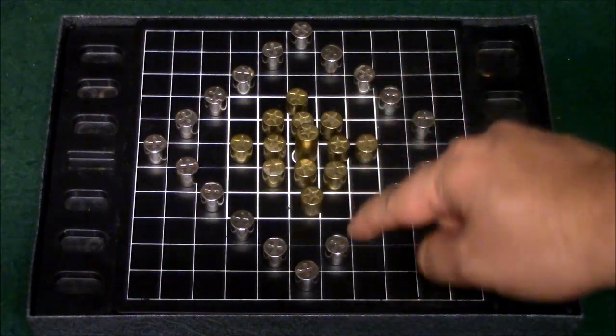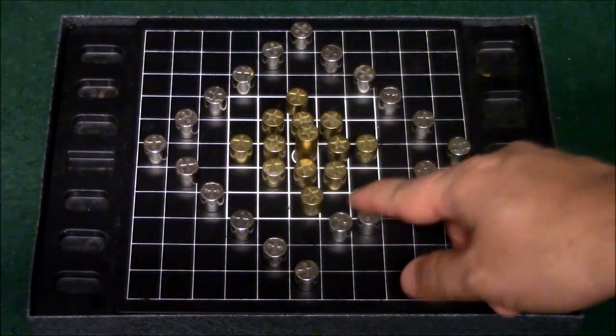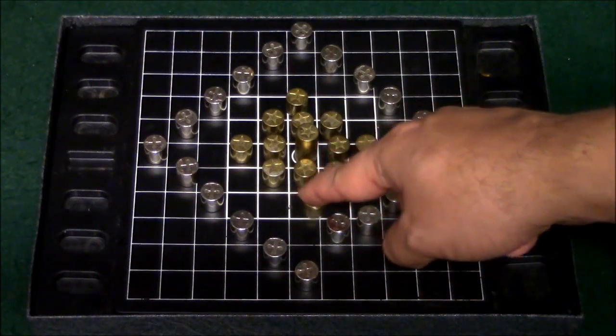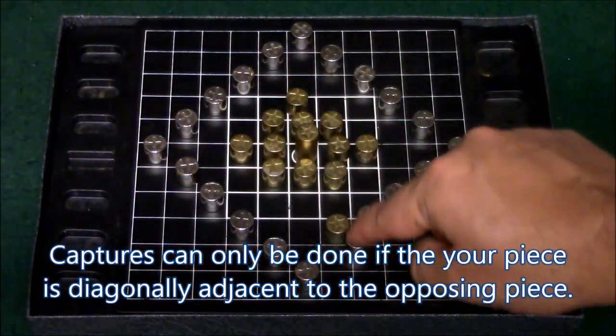There's also the capture move. The capture move is basically done like a pawn in chess. If you have a piece positioned over here, for example, in this gold's turn, gold will be able to capture the piece and put it out of play like so.